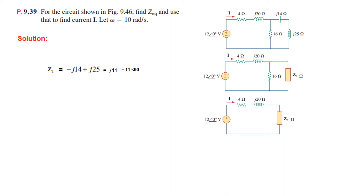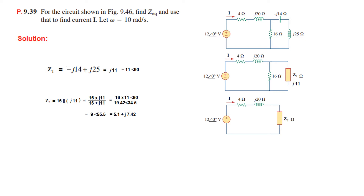Now these two are in parallel, so we solve them in parallel and give them the name Z2. Z2 is the parallel combination of 16 and Z1 (which is j11). We solve this using multiplication at the numerator and addition at the denominator.